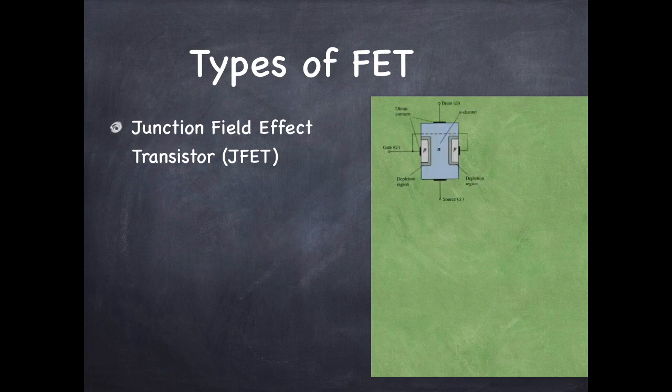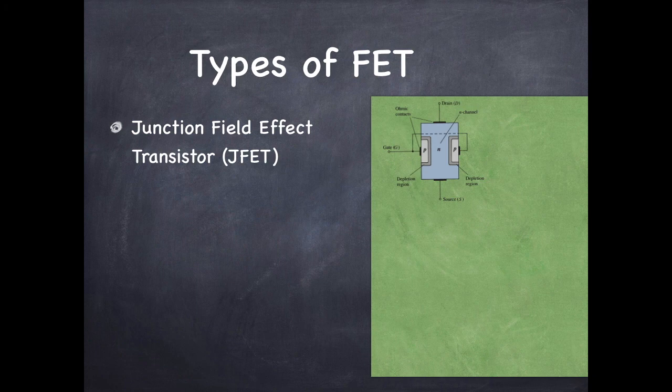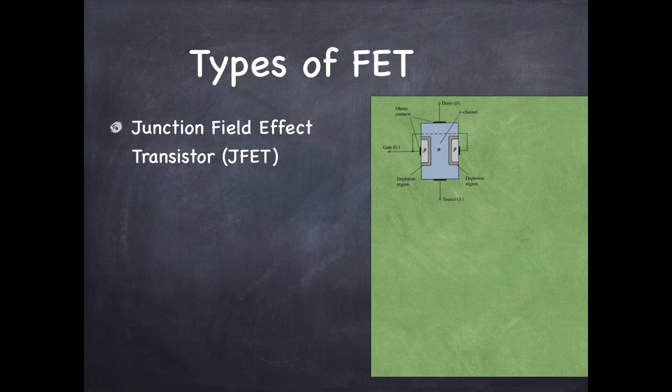Here a piece of N type semiconductor is given. The lower end of this semiconductor is the source and the upper end is the drain. The supply voltage VDD at the drain terminal forces free electrons to flow from source to drain.